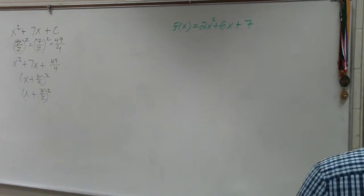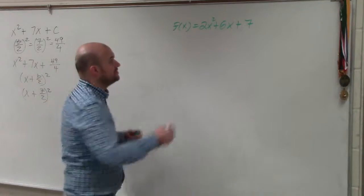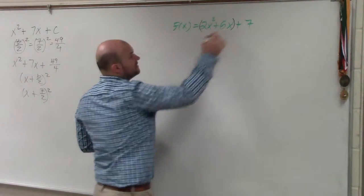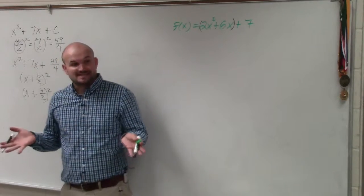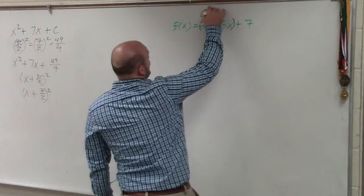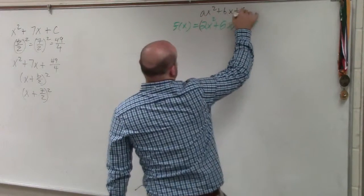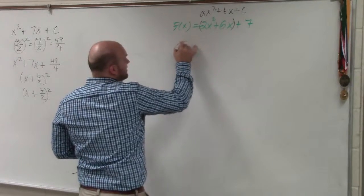So basically in this problem, if you just followed the steps that I went over, all I simply want you to do is first group your quadratic and your linear term. Second step, you have to factor out so a is equal to 1. If you guys remember, we have ax squared plus bx plus c, a has to be 1. So in this case, I can factor out a 2.